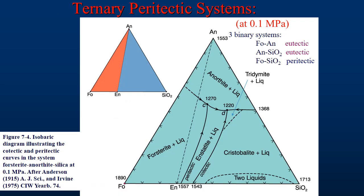The peritectic ternary diagrams are similar to those of the eutectic systems. Our time is going to be best spent focusing on the peritectic behavior, and we will only discuss the forsterite-enstatite system. For a bulk composition of A, cooling to a liquidus surface adds a solid phase of 100% forsterite first and reduces the degrees of freedom to 2. The liquid composition moves away from the corners towards the cotectic line. When the composition reaches the cotectic line at point B, enstatite is added as a solid phase, reducing the degrees of freedom from 2 to 1.